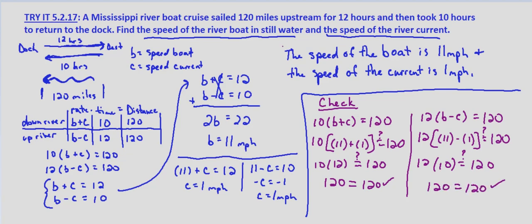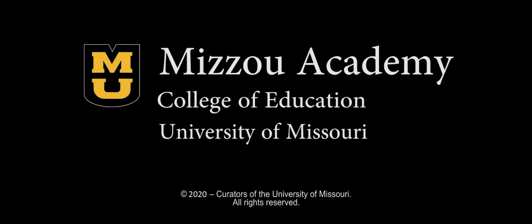So the speed of the boat is 11 miles per hour in still water, and the speed of the current is 1 mile per hour.